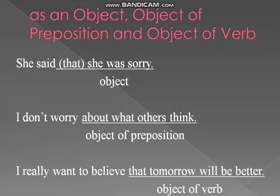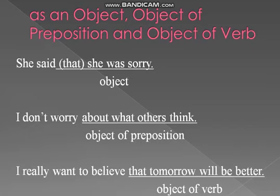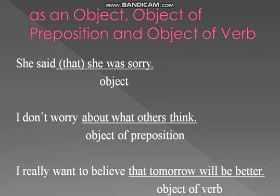A noun clause can also be used as an object — object of a verb or object of a preposition. For example: 'She said that she was sorry.' Here 'that she was sorry' is the noun clause used as an object. Note that 'that' may be omitted — 'she said she was sorry' — the meaning is still clear.